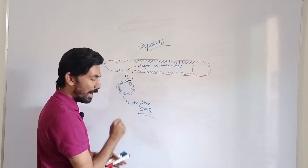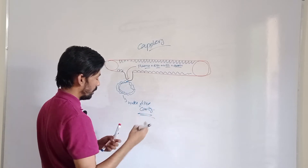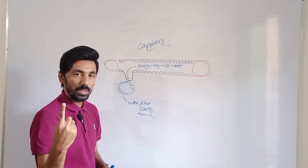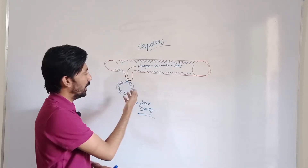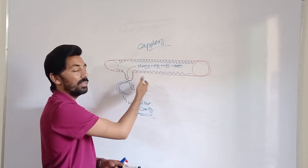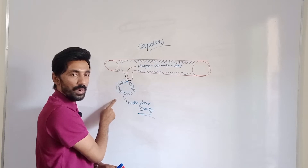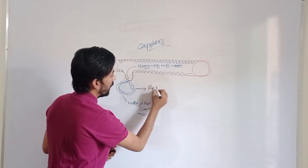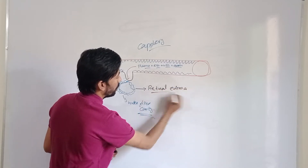The microaneurysm causes a water-filled cavity, and that water-filled cavity in the retinal tissue is called retinal edema. The first term was microaneurysms — the focal dilatation shown here — and if the microaneurysm is present, plasma, which has the least density, will come out first and make a water-filled cavity.